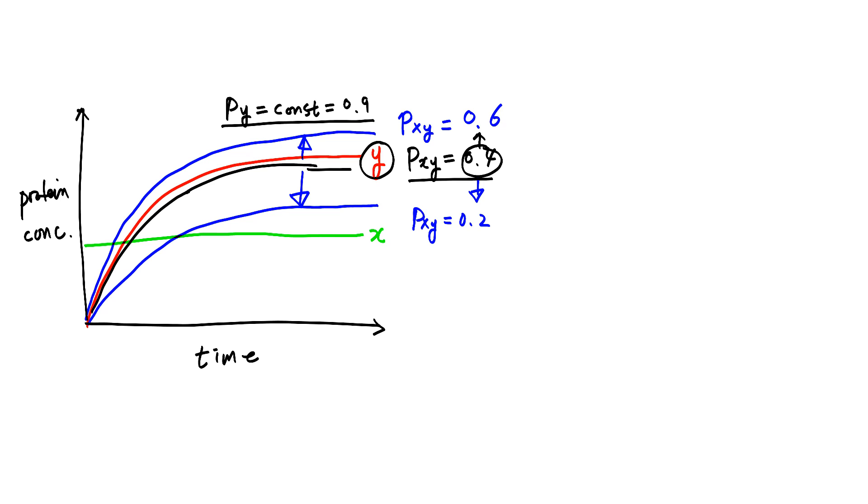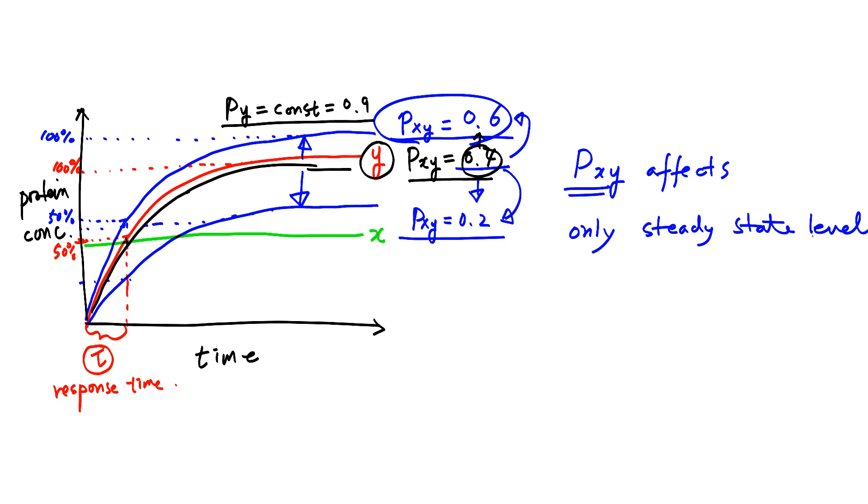How about the response time? If you look at response time, which is defined as the time it takes to reach 50% of the steady state level. So this is 100, and let's say this is 50. If this is 100% and this is 50%, this tau is the response time. What will happen to tau or response time when we change P sub XY value from 0.4 to 0.6 or 0.2? We have this 100% steady state for this case. If you find the 50%, it's about here. And you see that actually the response time does not change. So we see that P XY affects only steady state level and not response time.